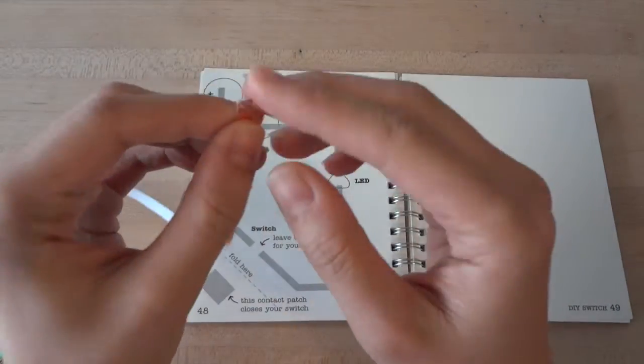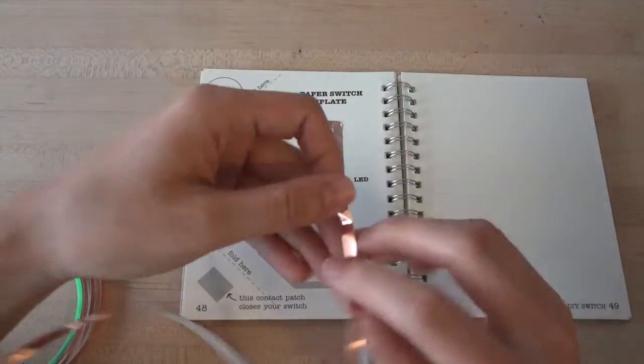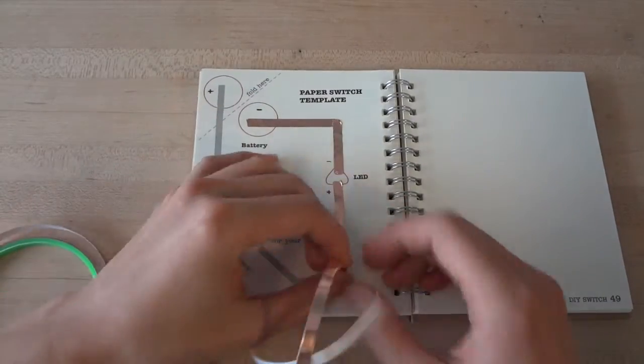First, stick conductive foil over the gray lines on your template. Remember to fold your foil at the turns, and watch out for the copper tape, as it can be sharp.